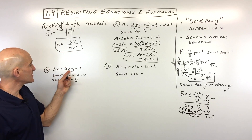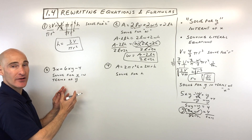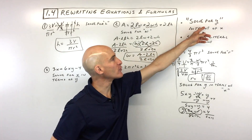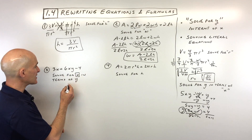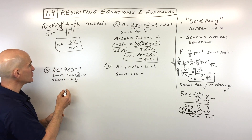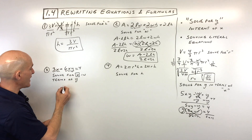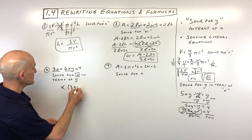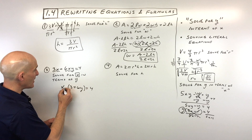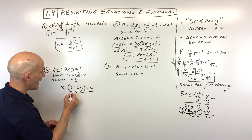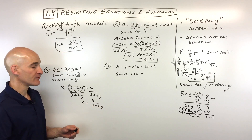Practice example three: 3x plus 6xy equals 4 — solve for x in terms of y. Both terms on the left contain x, so we factor out x, giving x times (3 plus 6y) equals 4. To isolate x, divide both sides by (3 plus 6y) — those cancel — and the final answer is x equals 4 over (3 plus 6y).